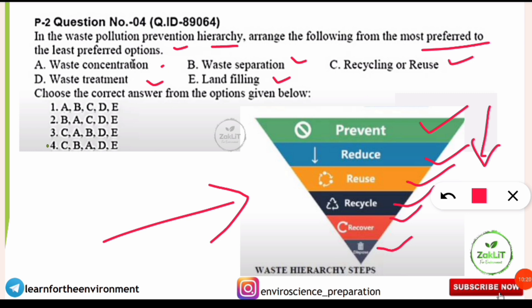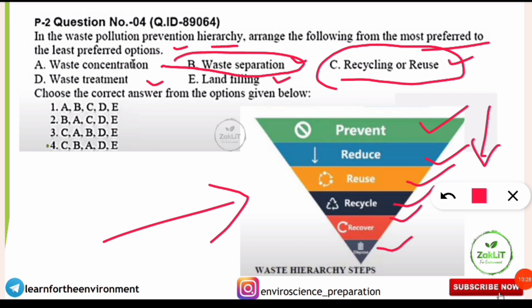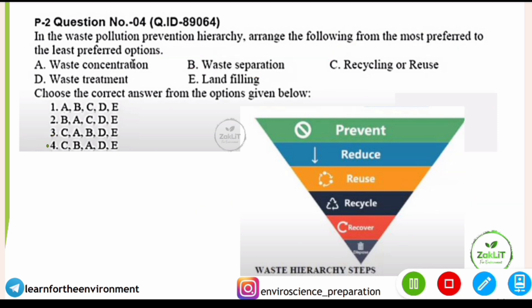As per the waste hierarchy, the correct sequence from most to least preferred is: first recycle or reuse, then waste separation, then waste concentration measurement, then waste treatment, and finally landfilling. So the correct option is C, B, A, D, E. Separation helps identify which type of waste is present in what concentration before treatment is applied.